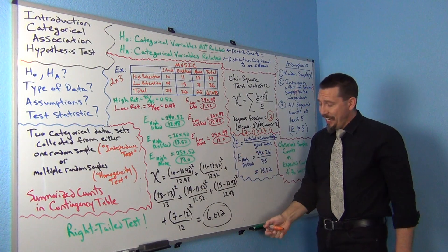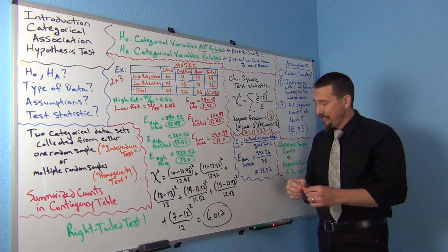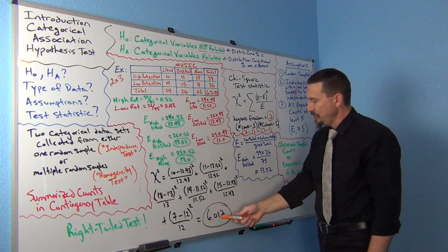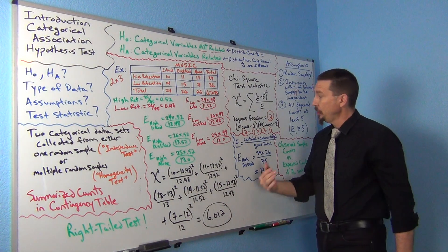Work all that out and you're going to get a chi-squared test statistic of 6.012.